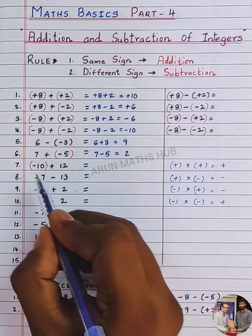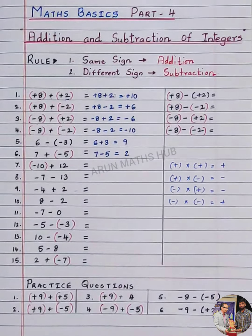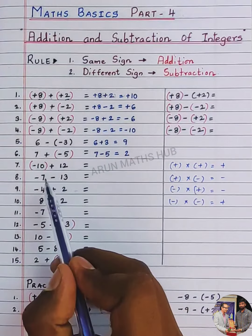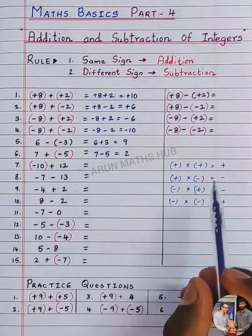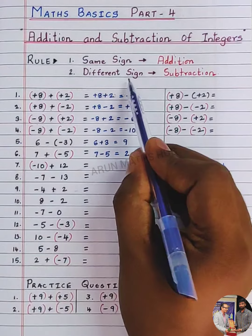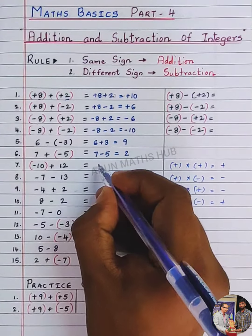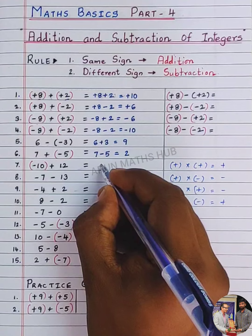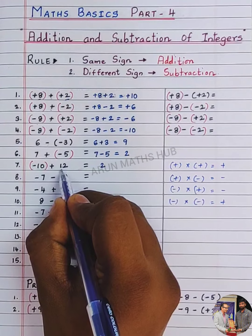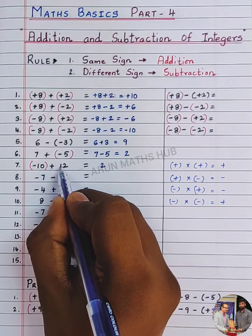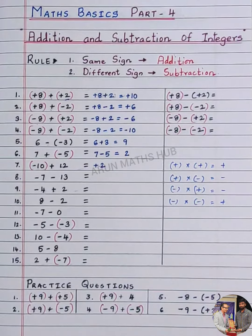Here, minus 10 plus 2 — that means the signs are different: minus and plus. If the signs are different, you should do subtraction. 12 minus 10 is 2. What is the bigger number's sign? The bigger number is 12, its sign is plus. So the answer is plus 2.